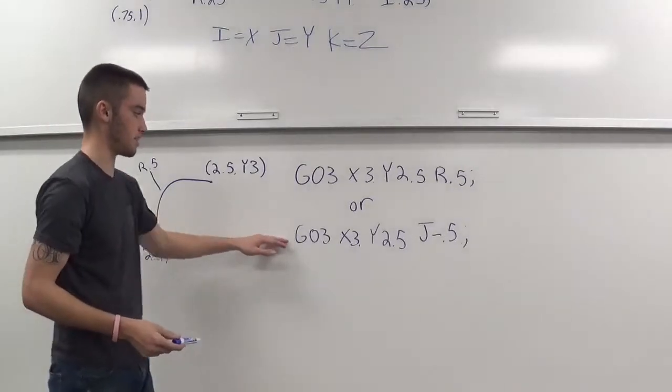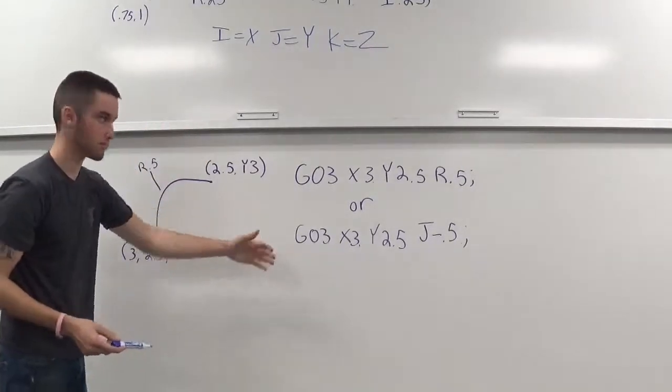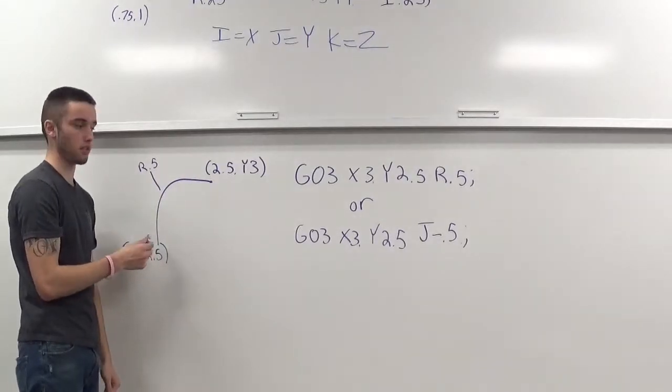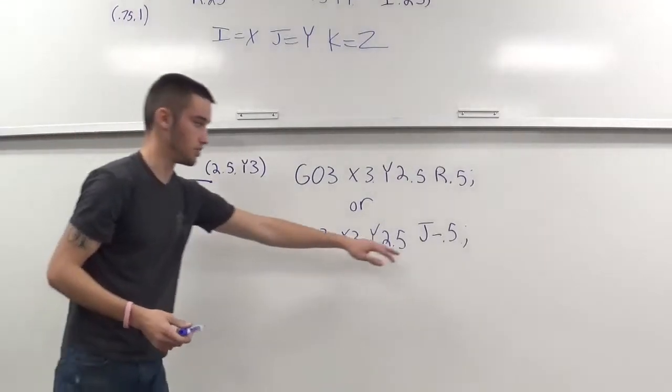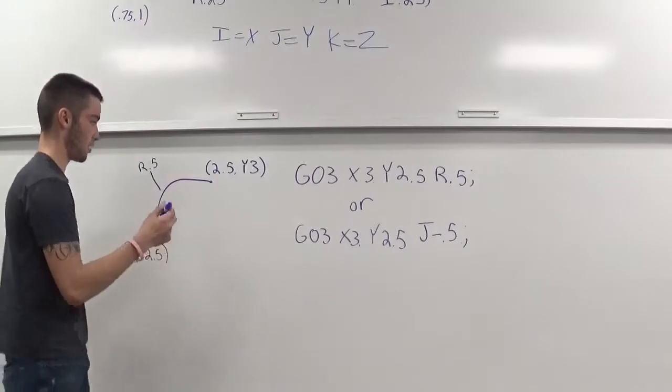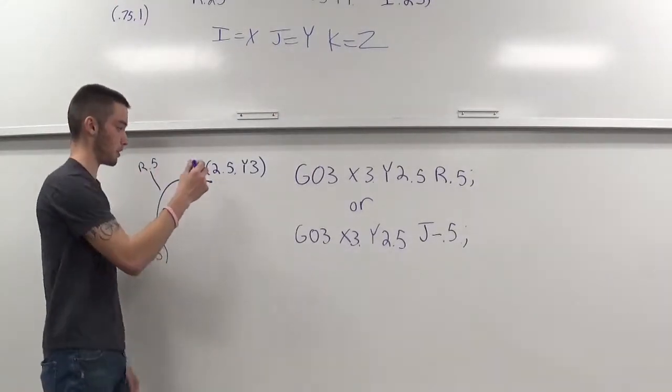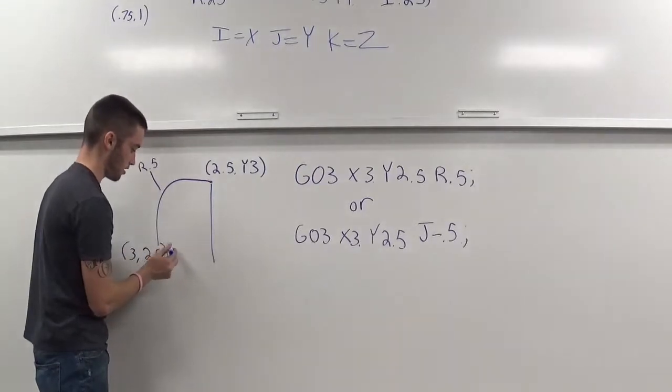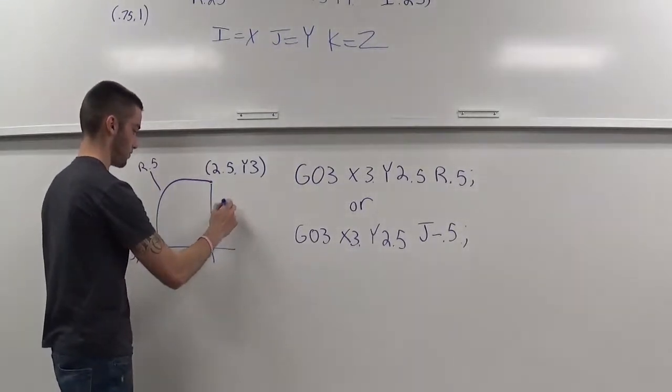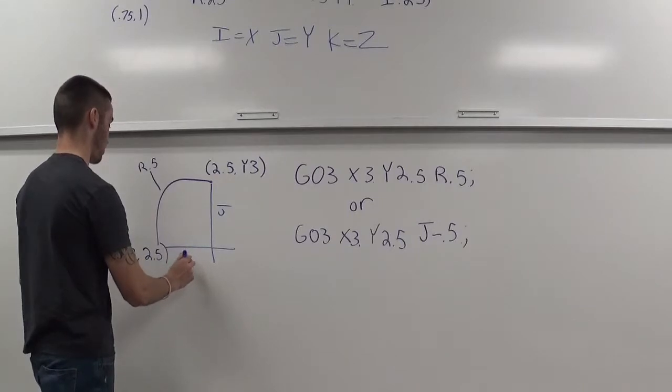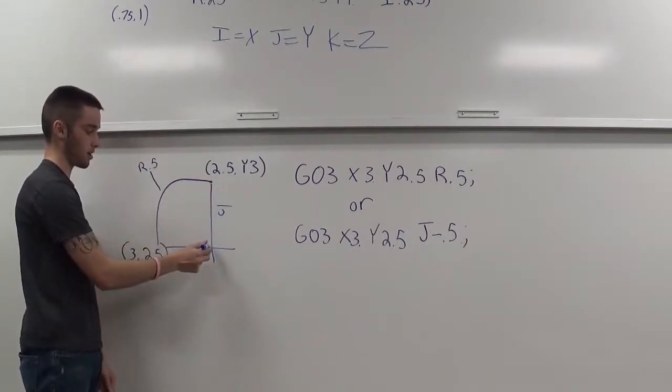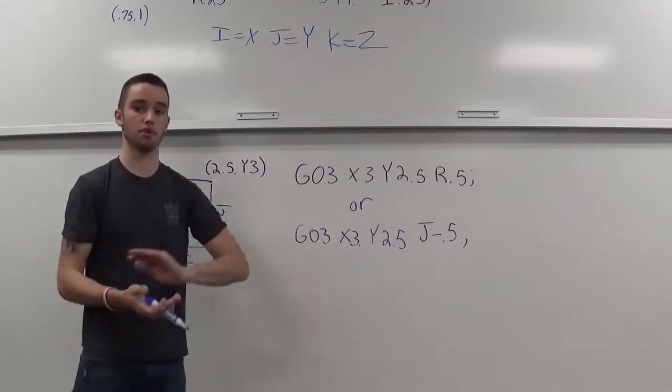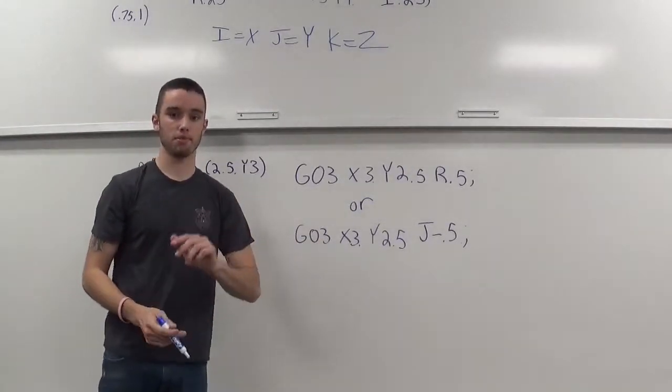And then back to the IJK method. Same rules. You have to start at the start point. And your x and your y value are the end point. And we have the J, which is a y. That means we're making an incremental move from our start point to the center point of the arc. So, here's our J. And here's our I. And start point to the center. That's all we care about. And that is minus 0.5. Remember, it's an incremental dimension.